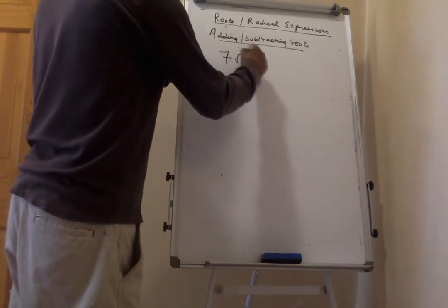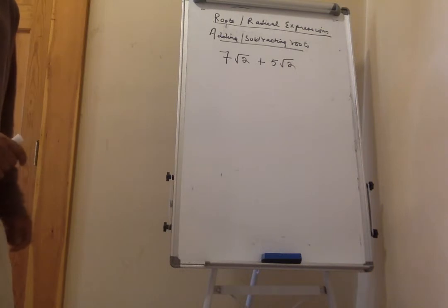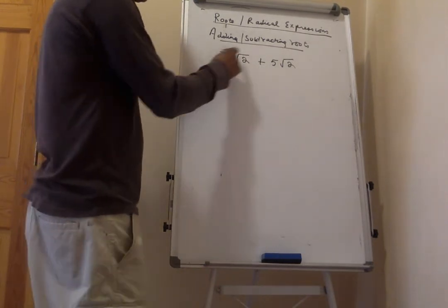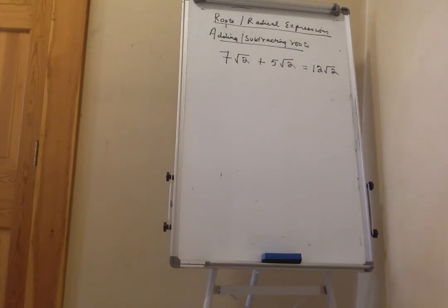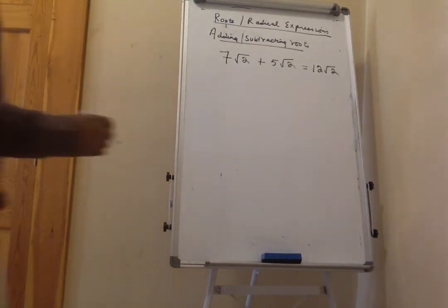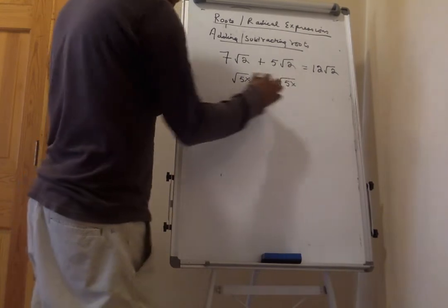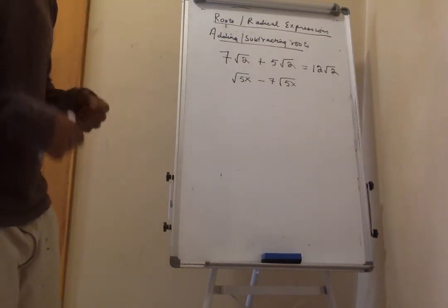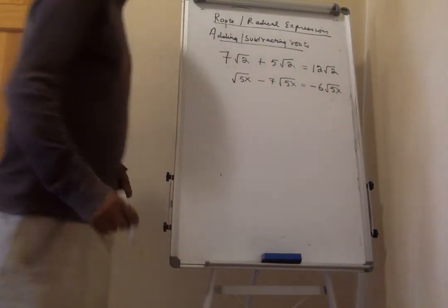So 7 times the square root of 2 plus 5 times the square root of 2: both have the same root, so add the coefficients outside — 7 plus 5 gives 12 times the square root of 2. Also, the square root of 5x minus 7 times the square root of 5x: subtract the coefficients — 1 minus 7 gives negative 6 times the square root of 5x.